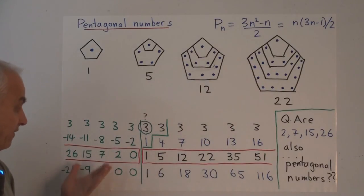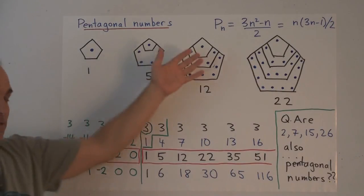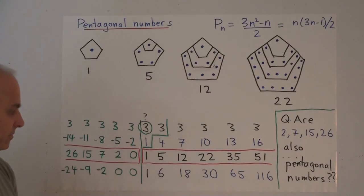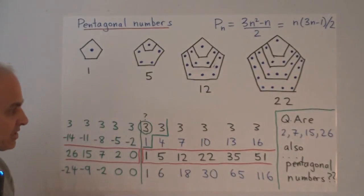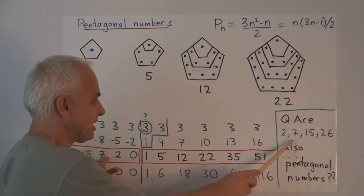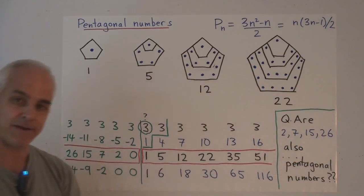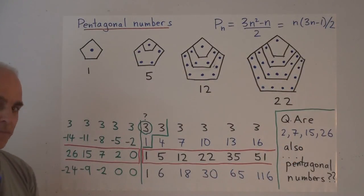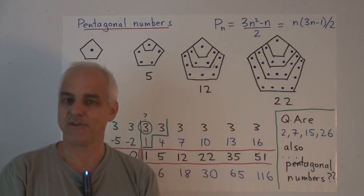Which are not, at least at first, recognizable in a geometrical form. So the question is, are these numbers 2, 7, 15, 26 also pentagonal numbers? And if so, what do they mean?